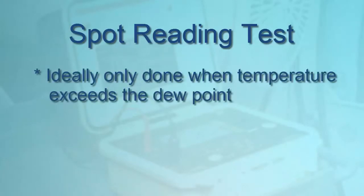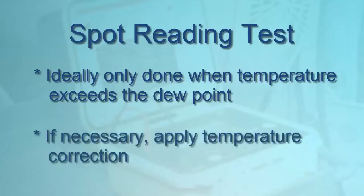To ensure your results are valid, spot testing should ideally only be performed on systems with temperatures exceeding the dew point. If tests are performed at different temperatures, carefully record the temperature of each test and apply the appropriate correction to determine what the resistance would be if the tests were performed at 20 degrees Celsius, or 60 degrees Fahrenheit.